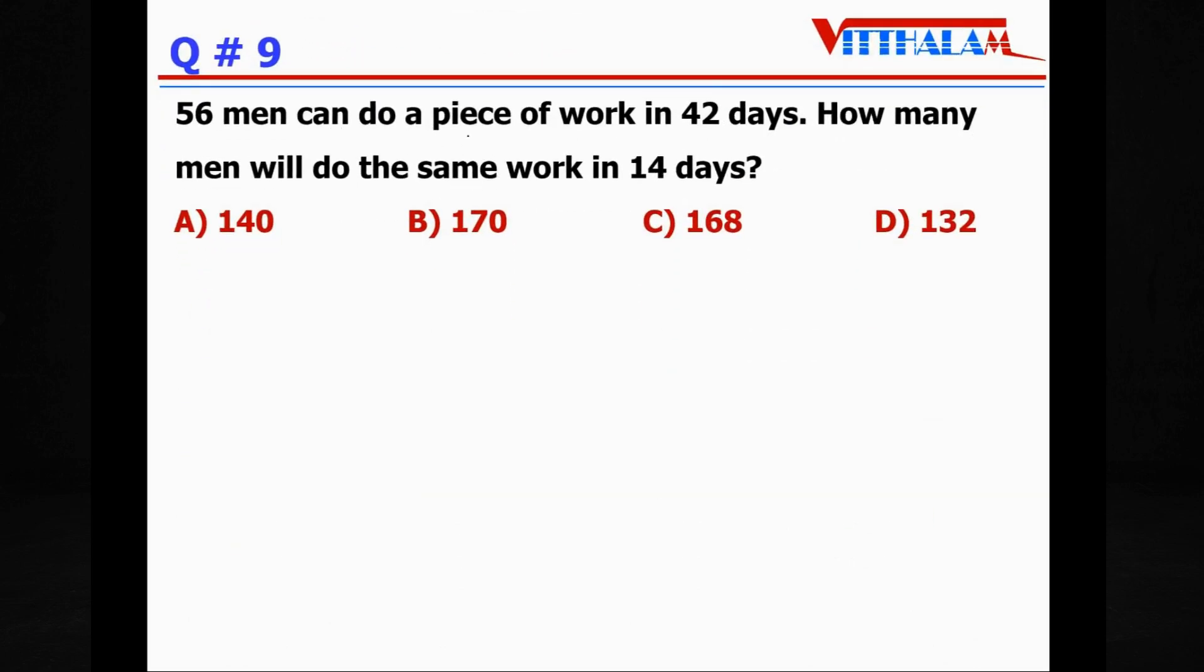Question 9: 56 men can do a piece of work in 42 days. How many men will do the same work in 14 days? Here it is not told whether it's direct or inverse, that's what we have to understand. Direct proportions: when x increases, y also increases. When one variable decreases, second variable also decreases. While inverse means: when x increases, y decreases. When x decreases, y increases. So here there are two variables: men and number of days. If men increase, days to do certain work will decrease. Therefore it is inverse proportional.